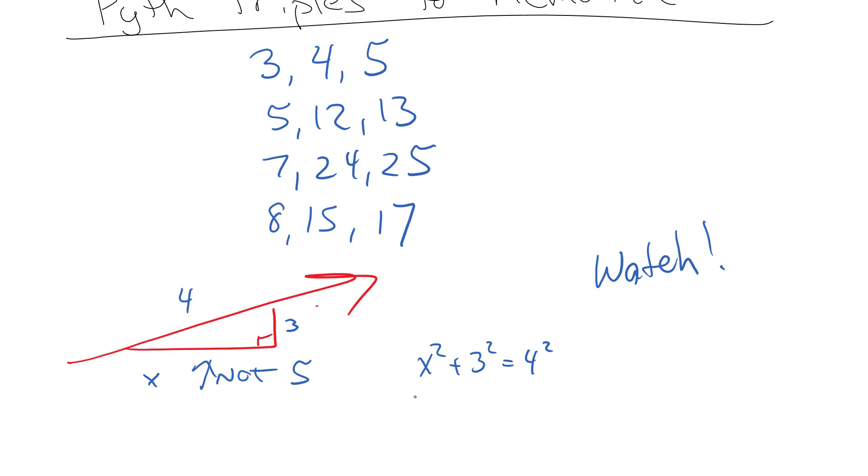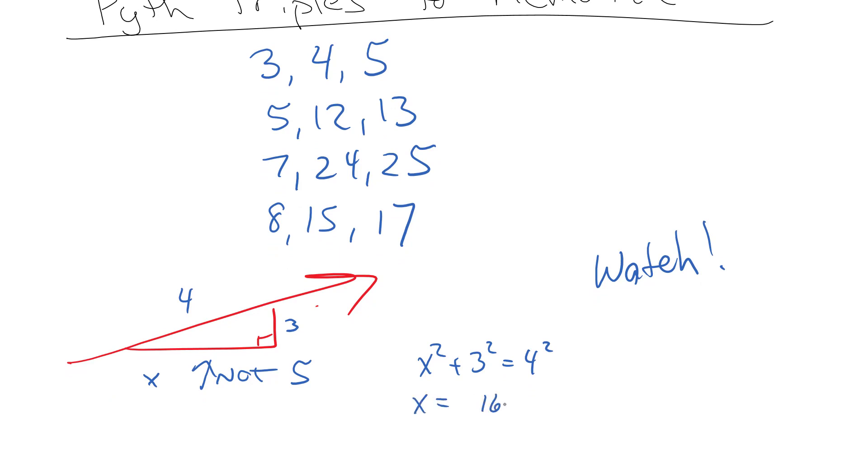So actually x would be equal to 16 minus 9 square root, so x in this case is actually the square root of seven. So it's really important that these here, the longest sides, are still the longest sides of the hypotenuse.